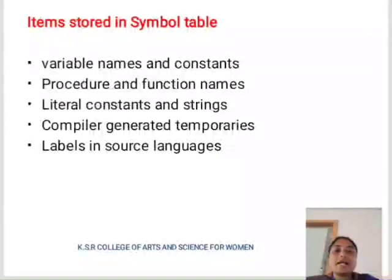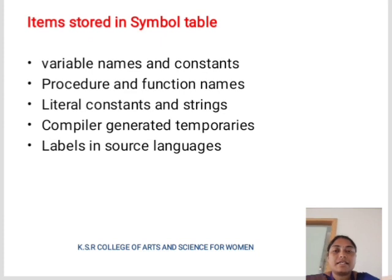Next is items stored in the symbol table: variable names and constants, procedures and function names, literals, constants and strings, compiler-generated temporaries, and labels in source languages.